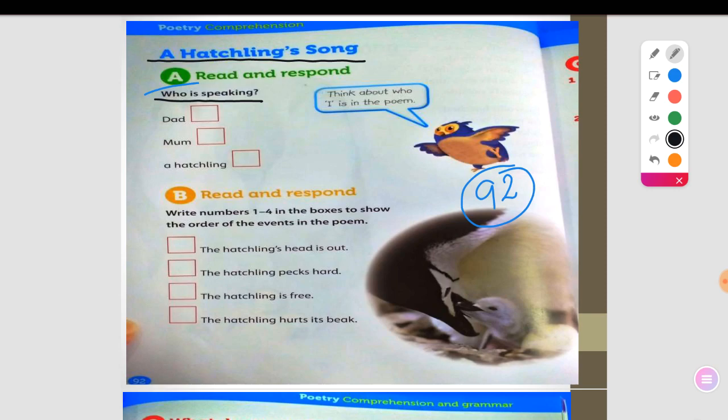Here we have: Is it dad? Is it dad speaking? I'm almost hatched. I'm almost hatched. I'm small. I'm wet. I'm not out yet. I'm almost hatched. So who is speaking in this poem?